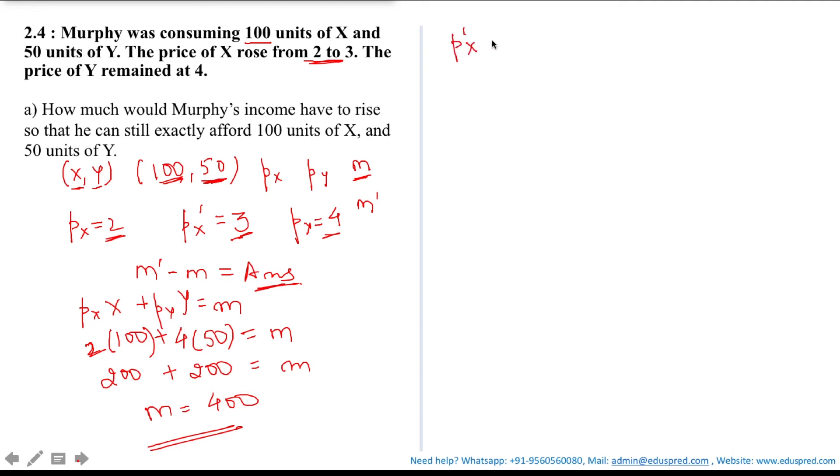That is it would be PX prime times X plus PY times Y is equal to M dash. Now PX prime is 3, that is 3, and the consumer is still consuming 100 units of X and 50 units of Y that would give me 100 and 50 here and PY remains as it is which is 4.